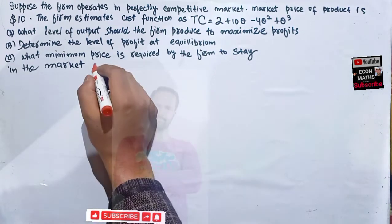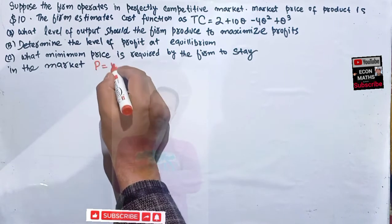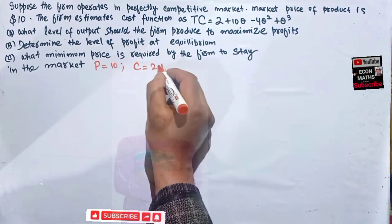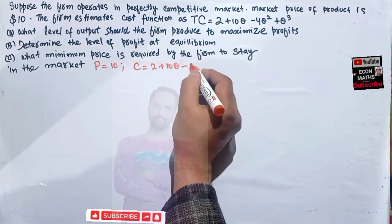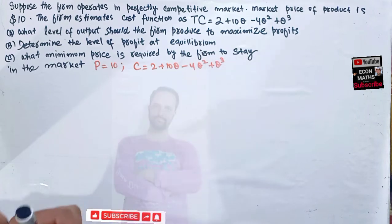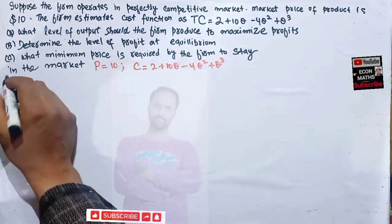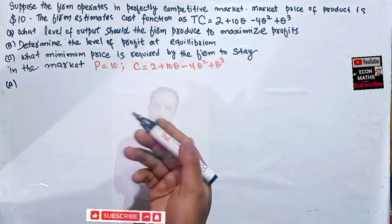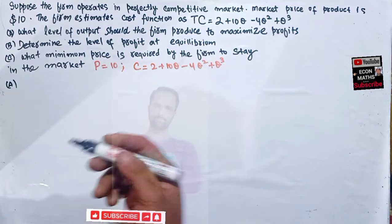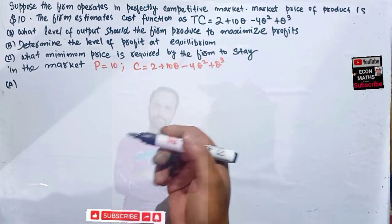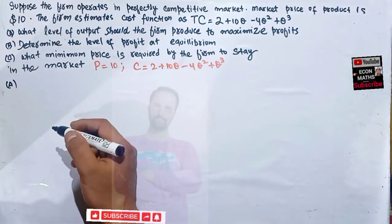We are given price equals $10, and total cost equals 2 plus 10Q minus 4Q squared plus Q cubed. For Part A, the firm will maximize profit at the point where price equals marginal revenue, which in turn equals marginal cost.